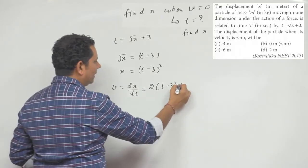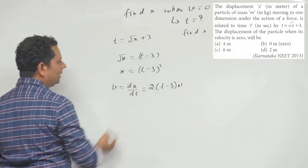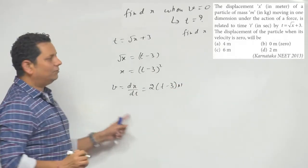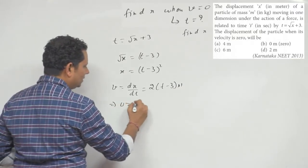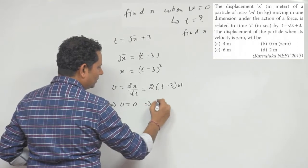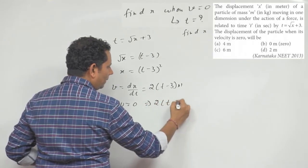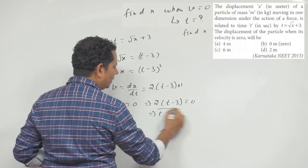Taking the derivative, dx/dt equals 2(t minus 3). When velocity equals zero, this means 2(t minus 3) equals 0, which implies t equals 3.